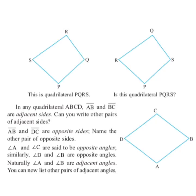In the first figure, starting from vertex P, the vertices go P, Q, R, S in order. But in the second figure, although the name given is PQRS, after vertex P comes vertex S, then vertex Q, then vertex R. So this quadrilateral is not quadrilateral PQRS.